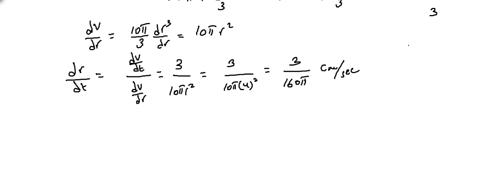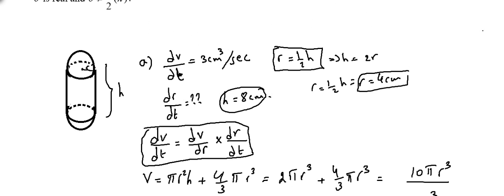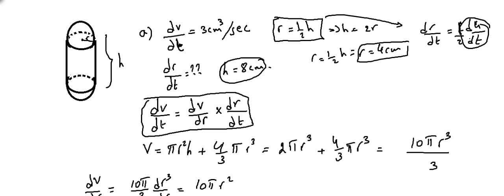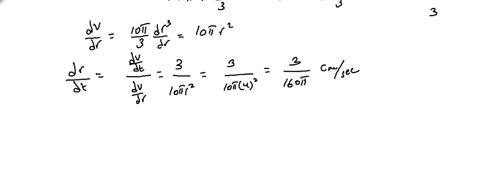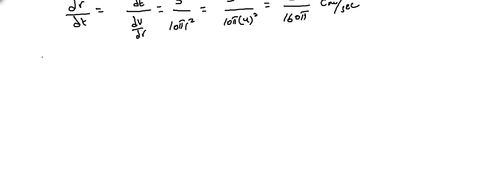Alternatively, we could find the volume in terms of h, differentiate, find dH/dt, then use r = h/2 to get dr/dt = (1/2) dH/dt. Both approaches work, but the direct method in terms of r is simpler. That finishes part A.